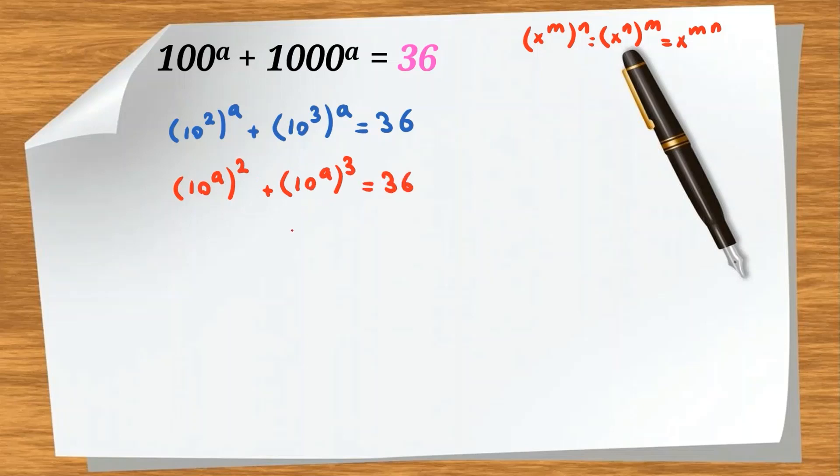Now, we can use a change of variable and say, okay, 10 to the A equals y, so we can write y squared plus y cubed equals 36.